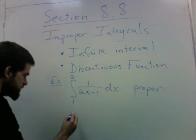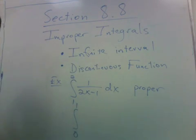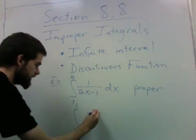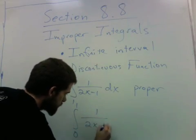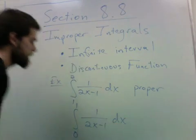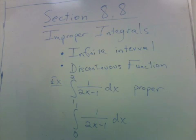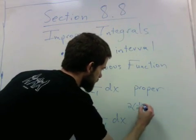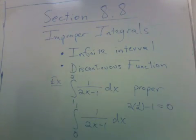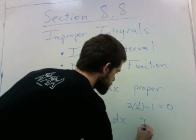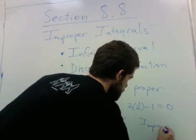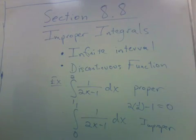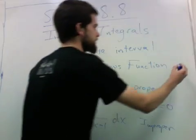But if we change the interval, we go 0 to 1 instead. Now the function has a discontinuity at x equals 1/2 because 2 times 1/2 minus 1 equals 0. This one is improper. So this falls under this category.